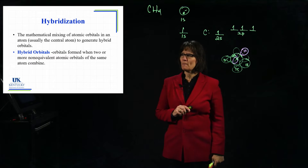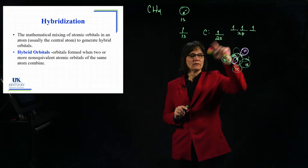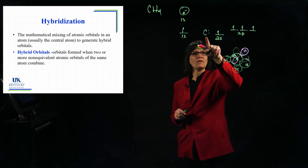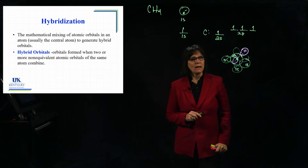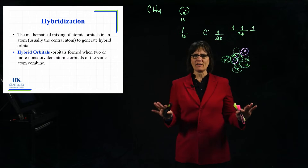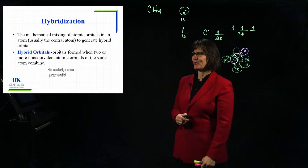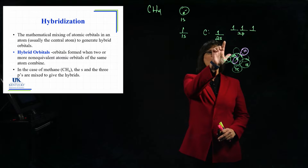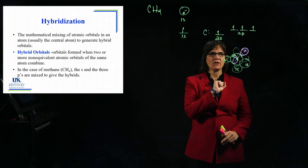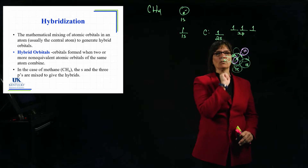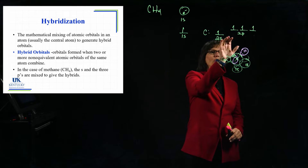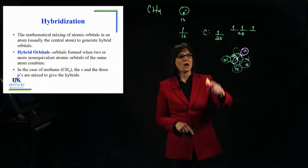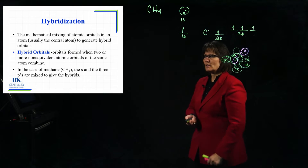Hybrid orbitals form when two or more non-equivalent atomic orbitals on the same atom - notice all of these are on the carbon - are combined. Now this is a mathematical combination that's happening, and we cannot look at the mathematics of it. In the case of methane, we're going to take this s and mix it with those three p's. We're going to mix those together, and those are going to form our new atomic orbitals. They're still atomic orbitals, but they're not called s's and p's - they have new shapes and new directions.